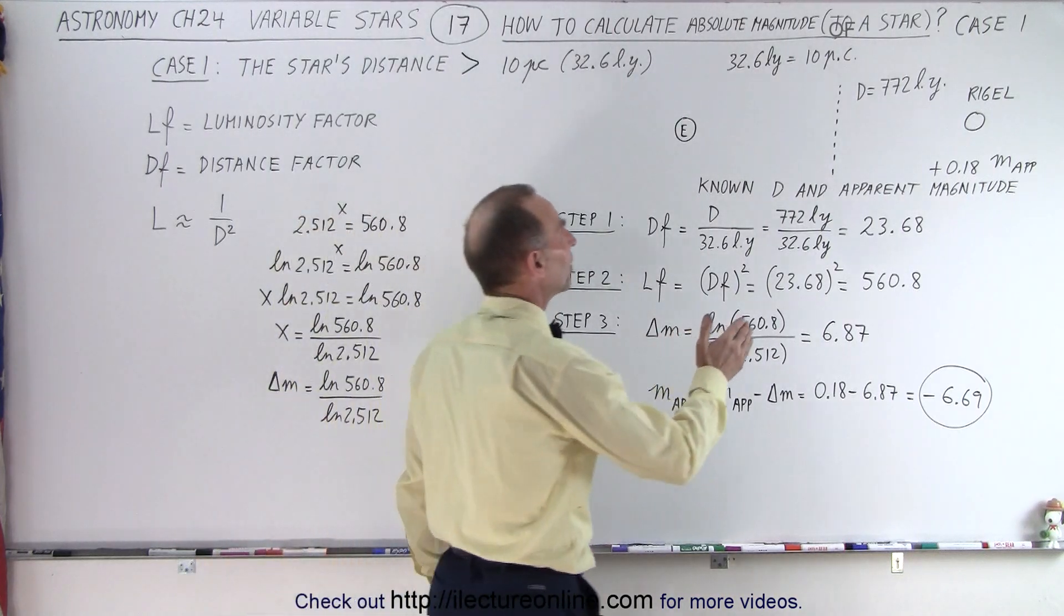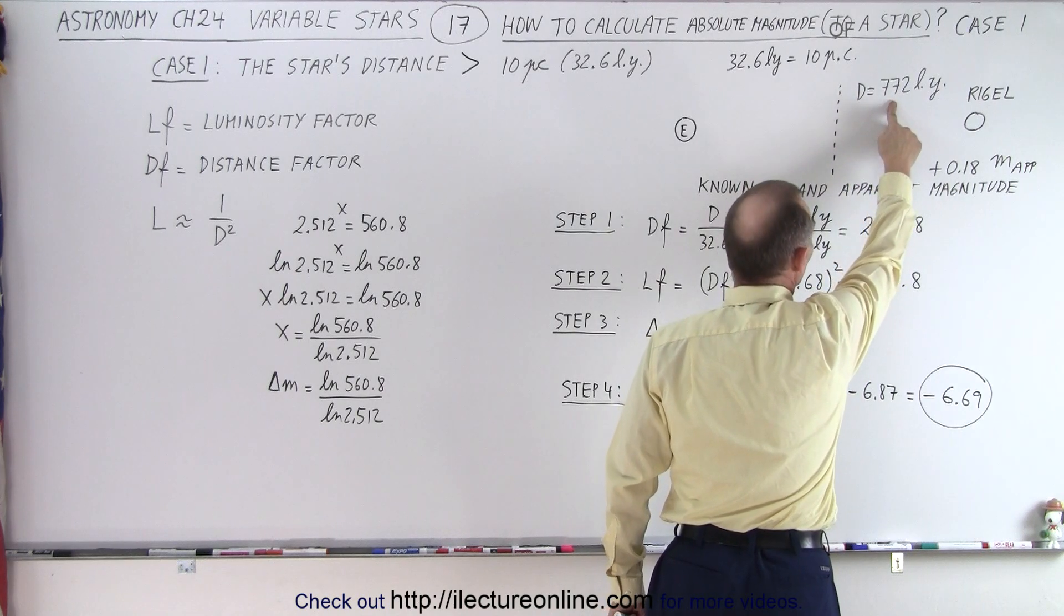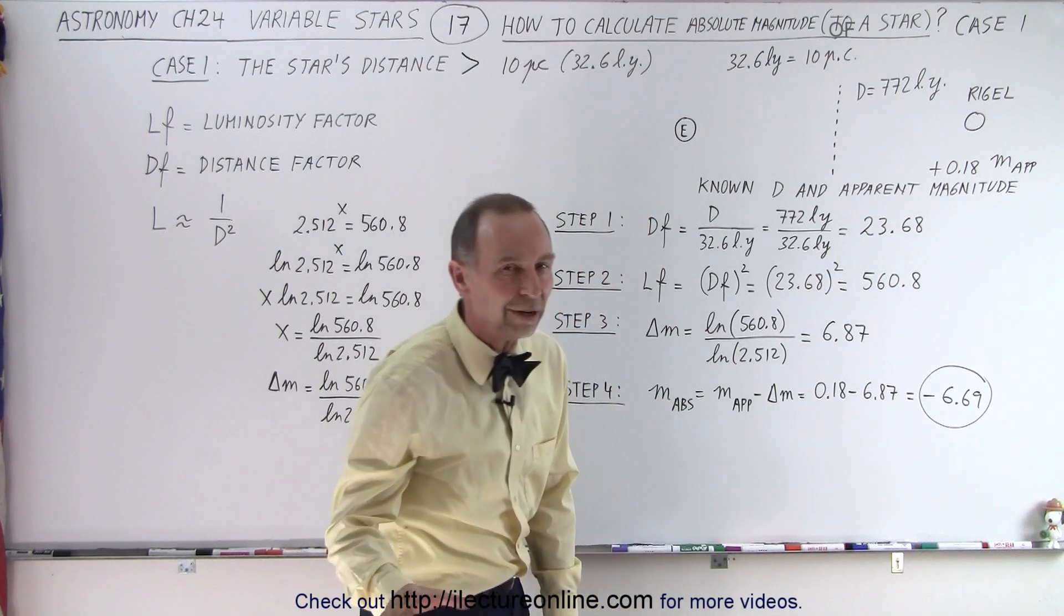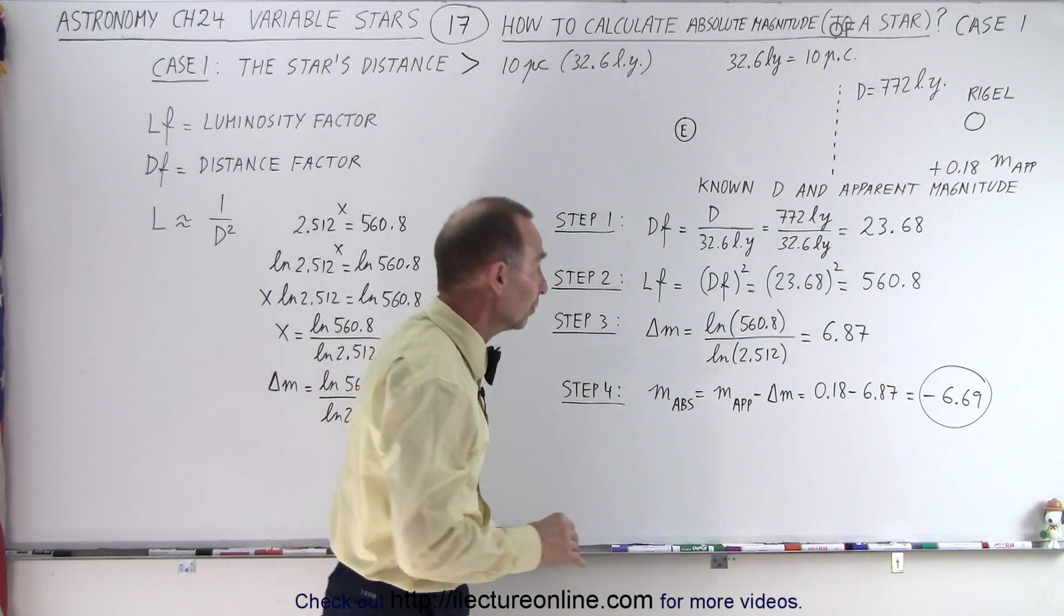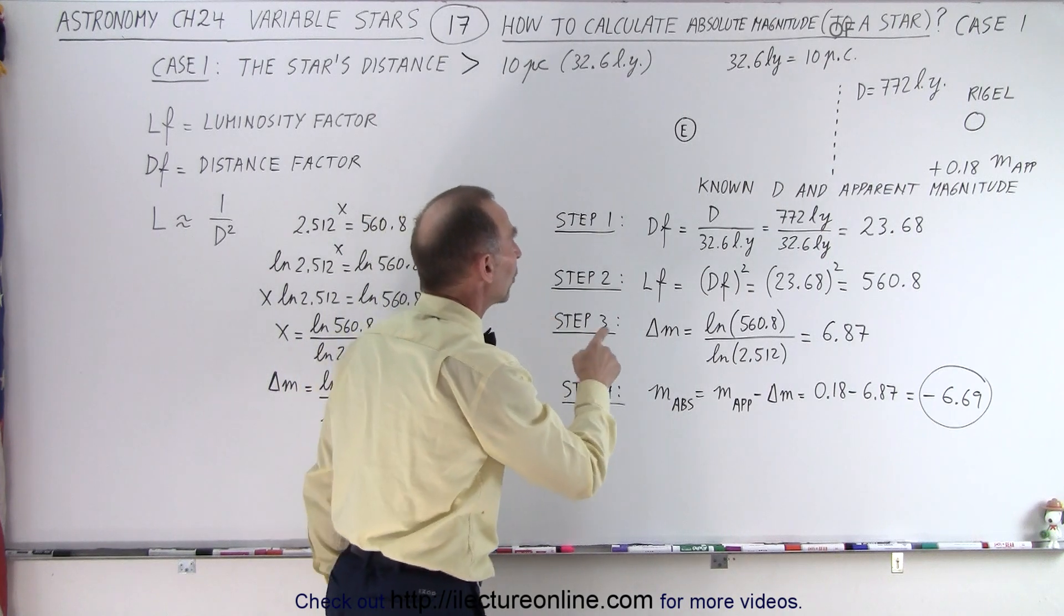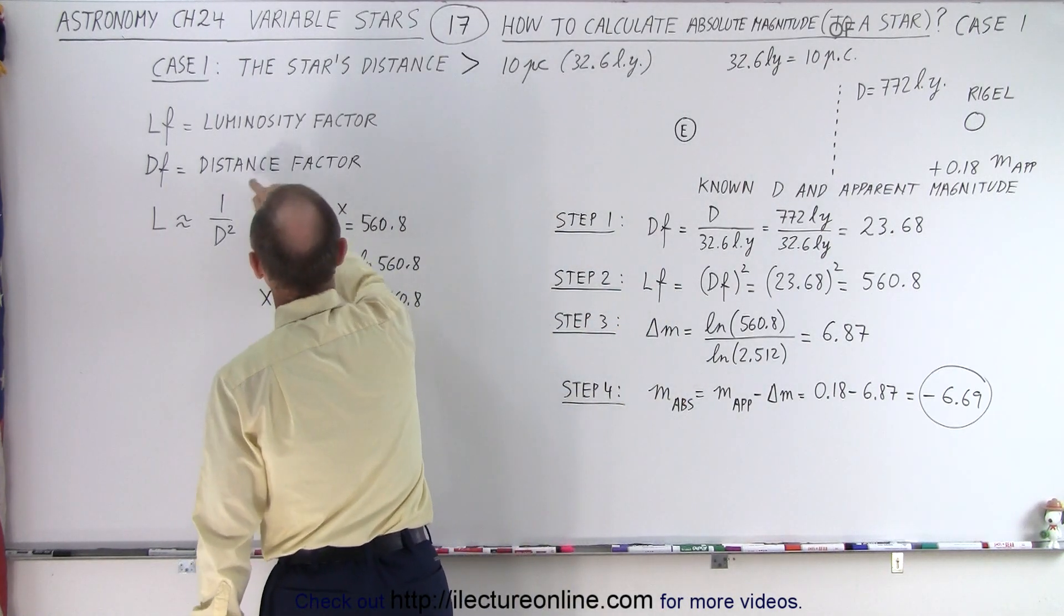Well, first of all, we realize that Rigel will be farther away than 10 parsecs. The distance is known, 772 light years, and we know the apparent magnitude. We're trying to find the absolute magnitude. And again, we're going to go through four steps. Step one, we're going to find the DF, which is known as the distance factor.